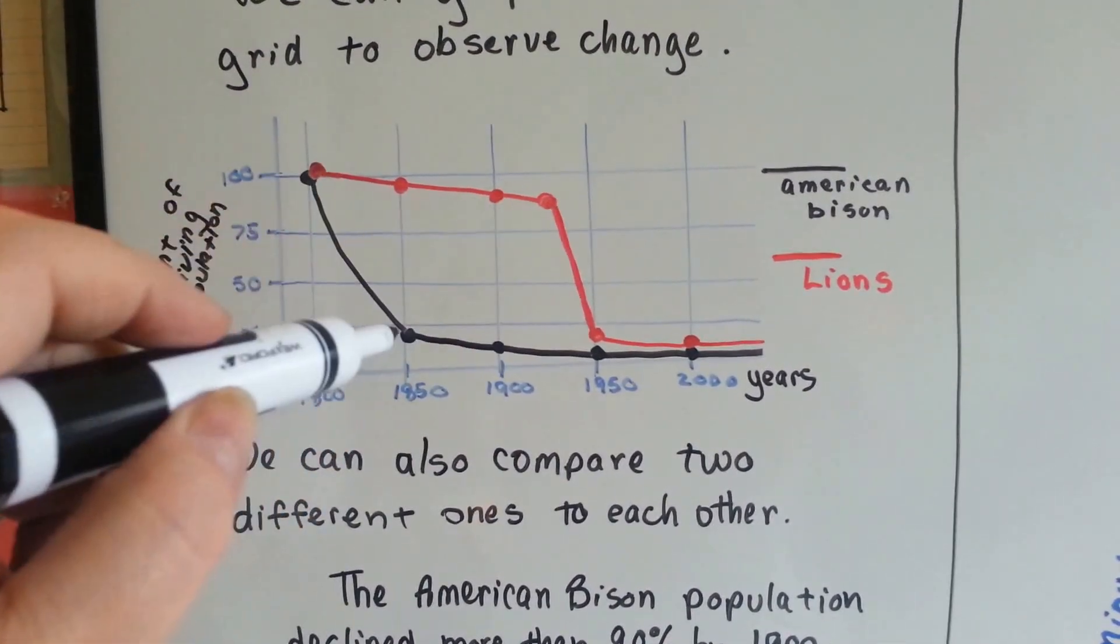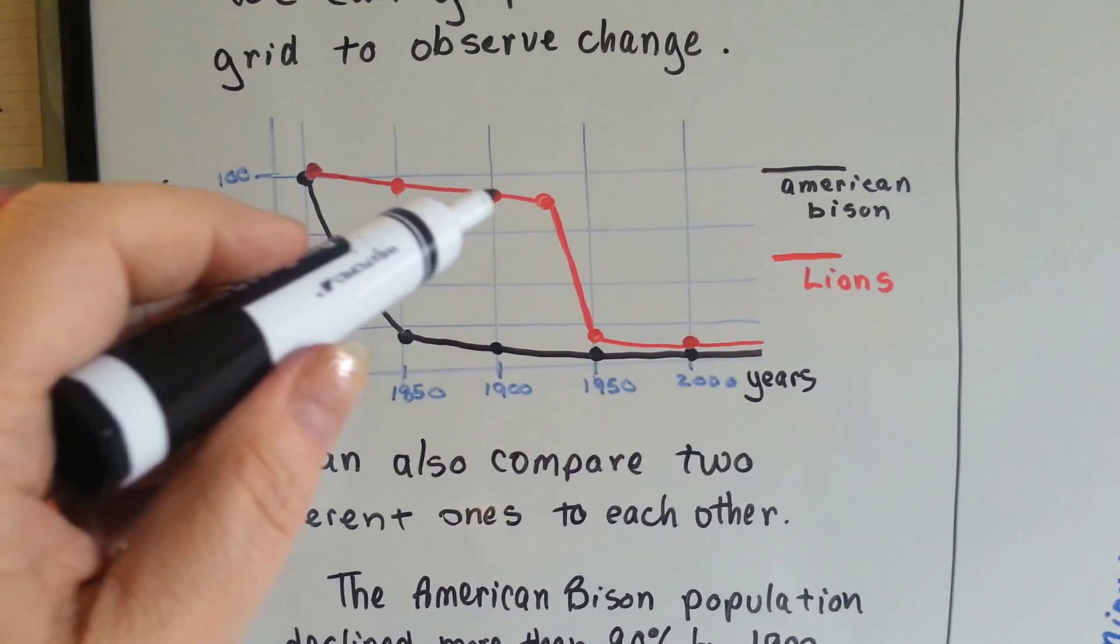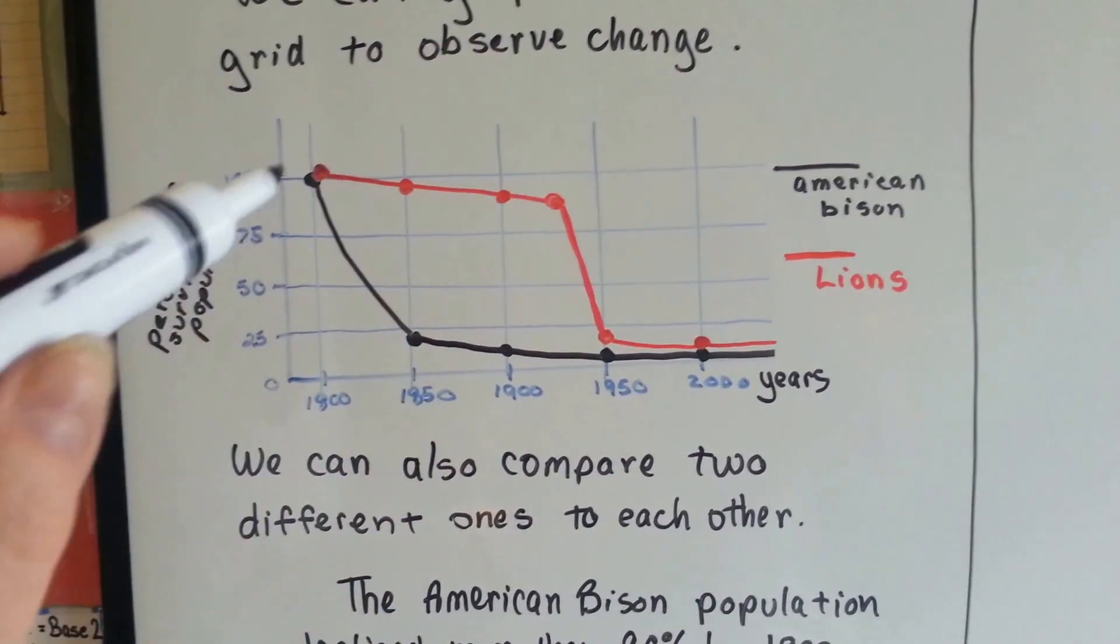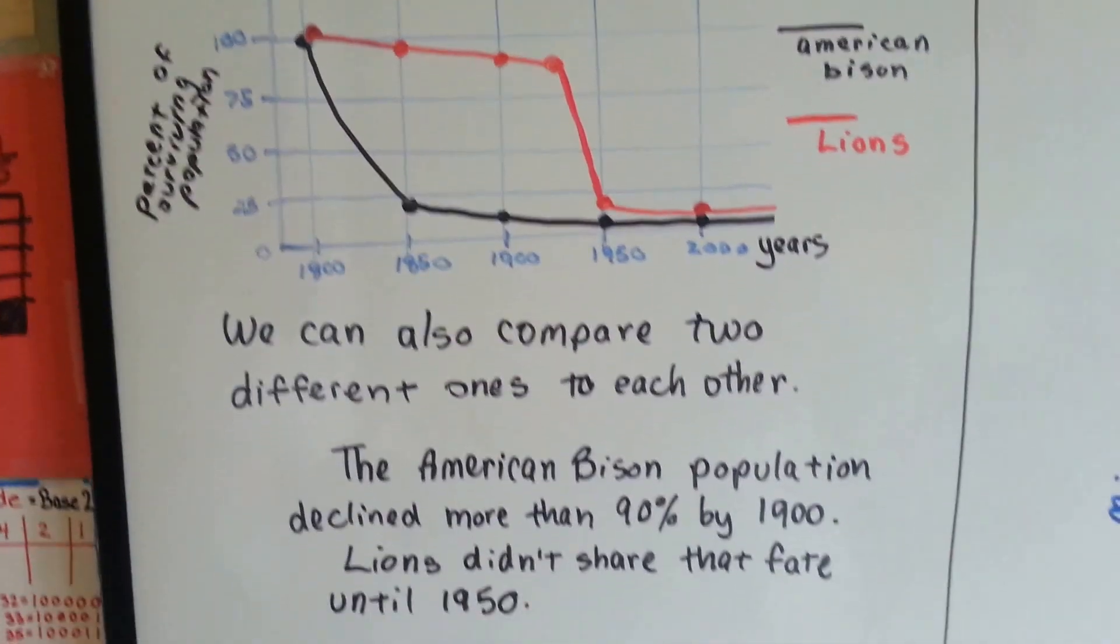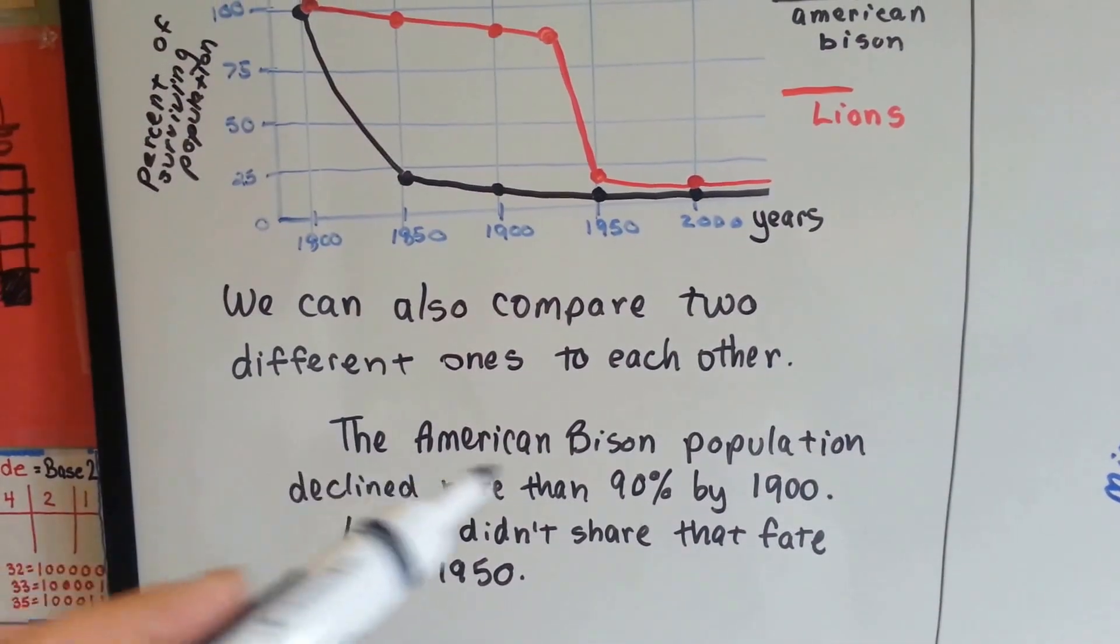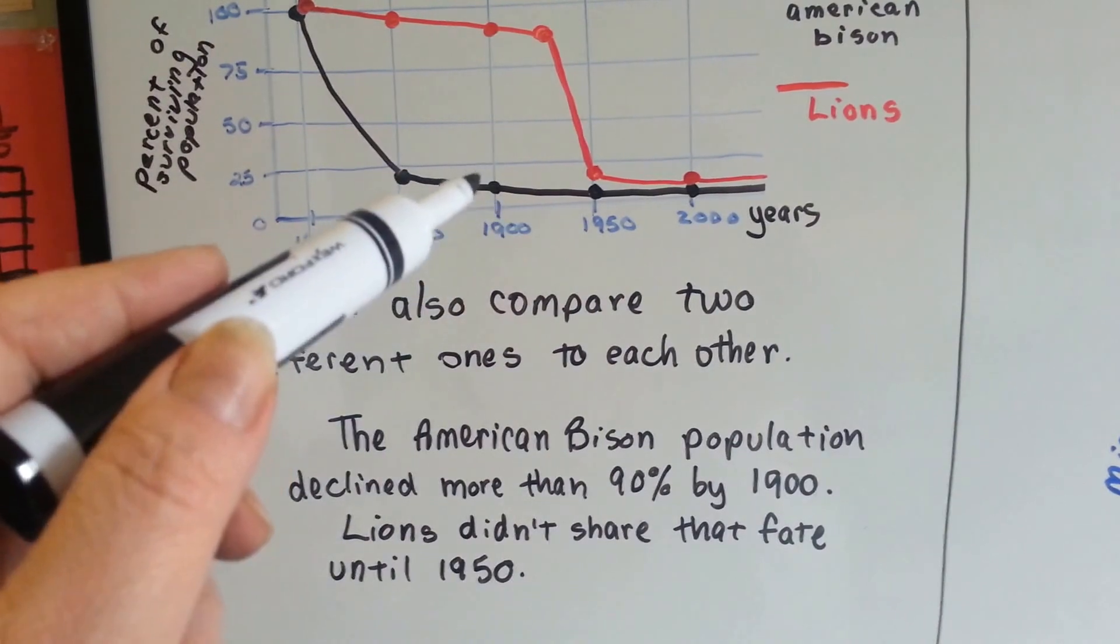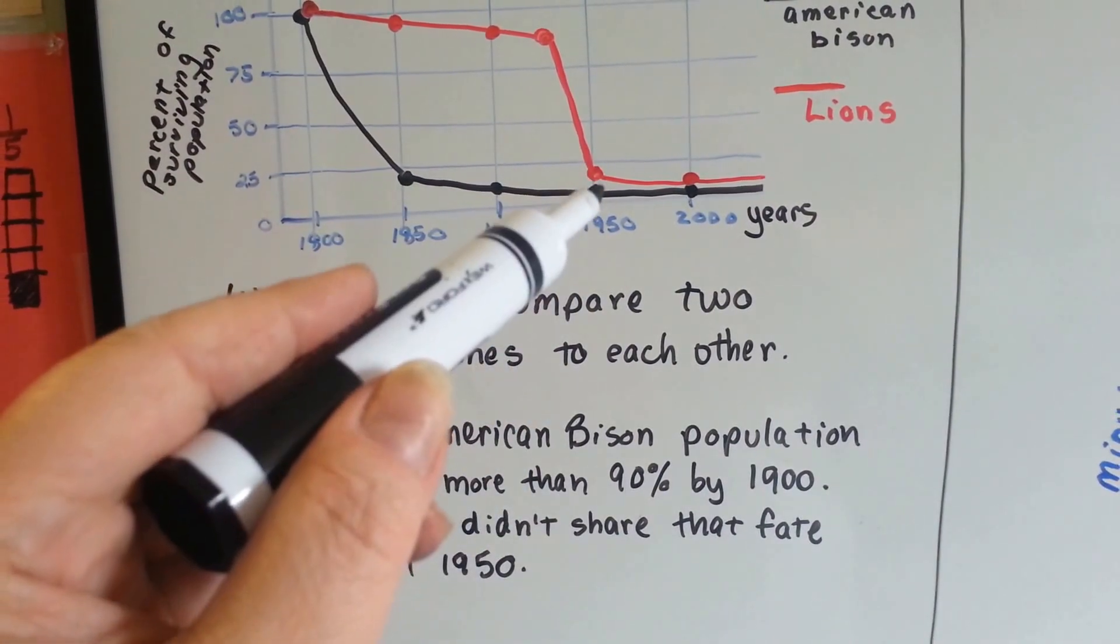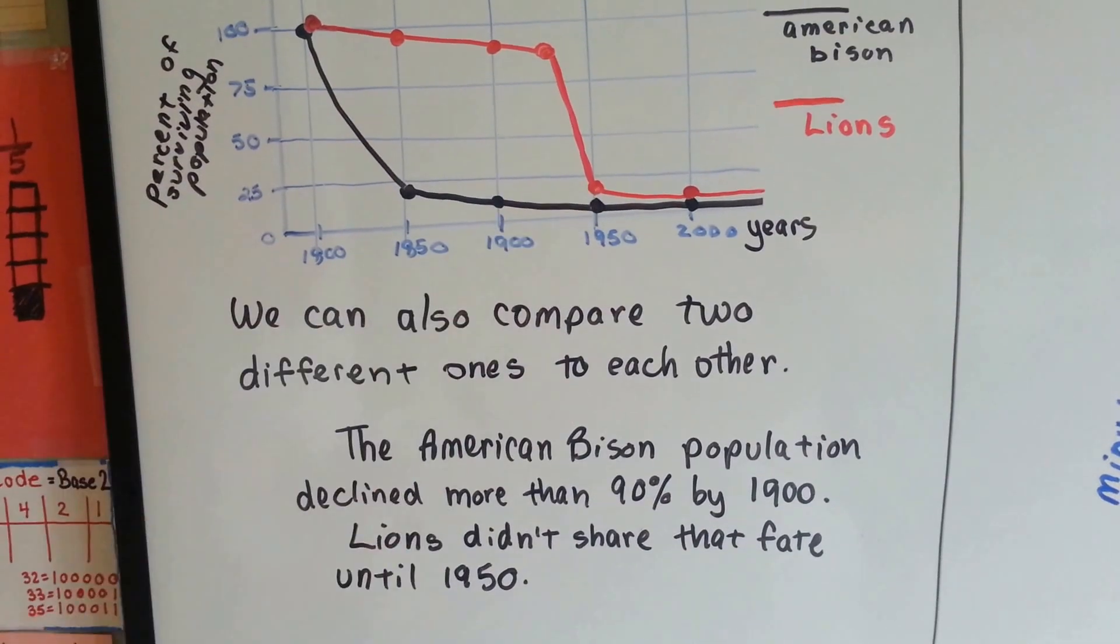By looking at this graph, we can compare the two and see how lions slowly declined, but were lasting a lot longer than the American bison. We can see that they declined by 90% by 1900 for the American bison, and we can see the lions are right there.